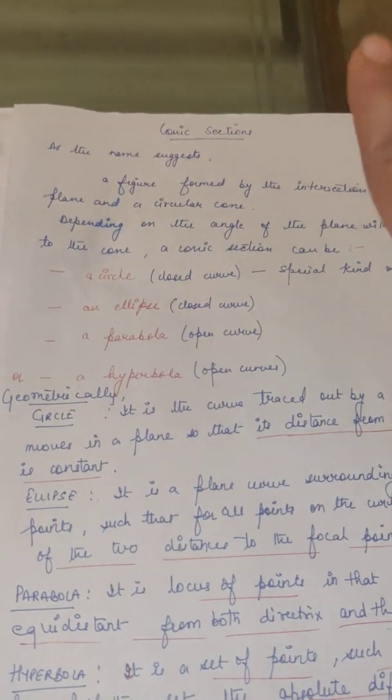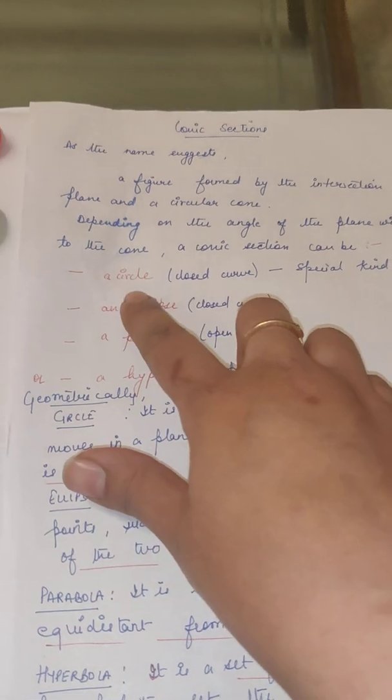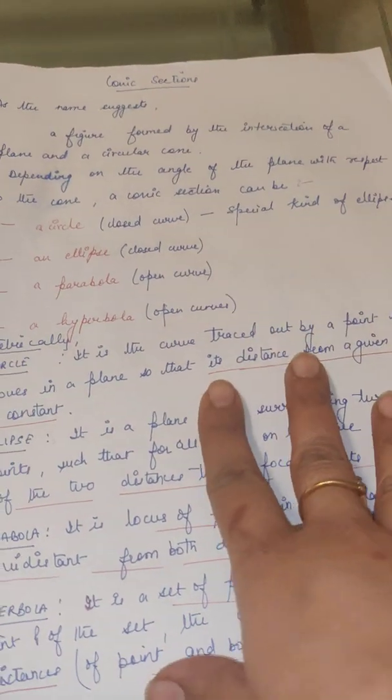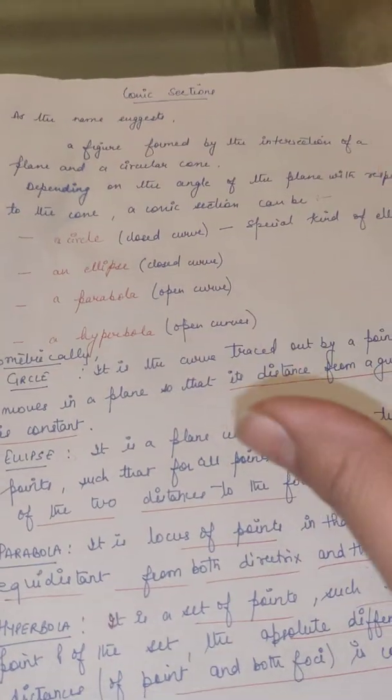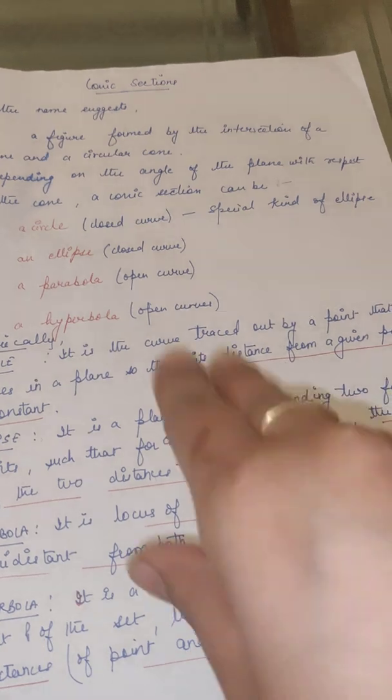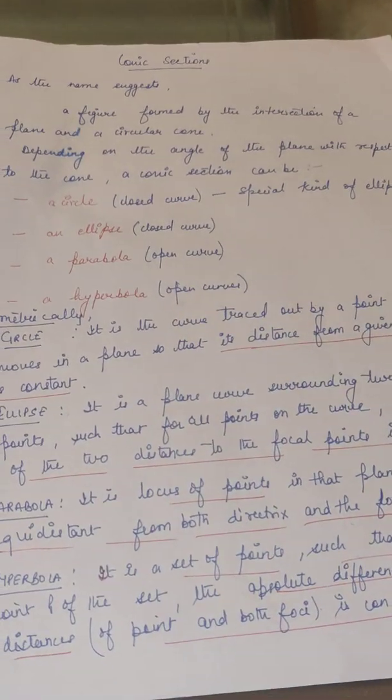Actually, there are mainly three types only: ellipse, parabola and hyperbola. Circle is a particular case of ellipse only. If you take all the distances equal, that means if a and b are equal, you will get a circle. I will show you how all this happens.